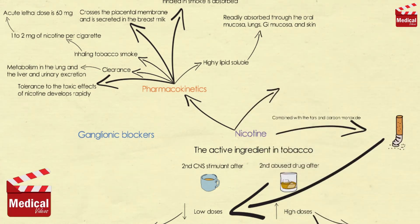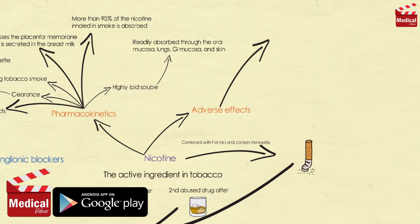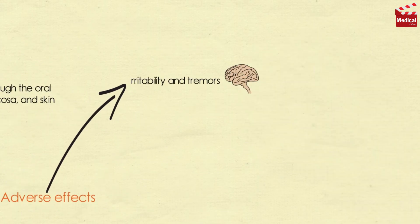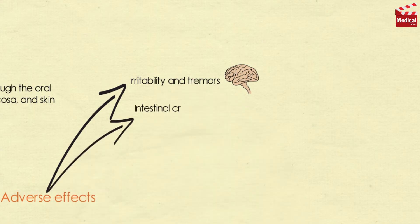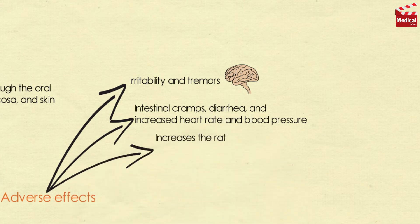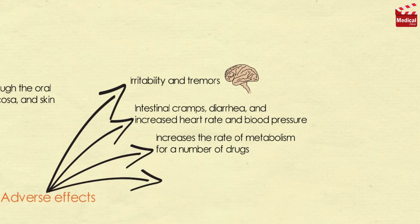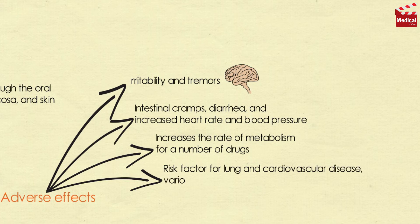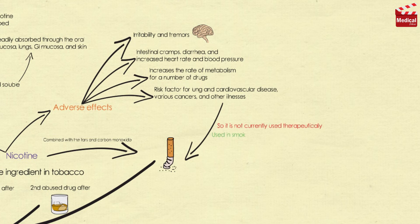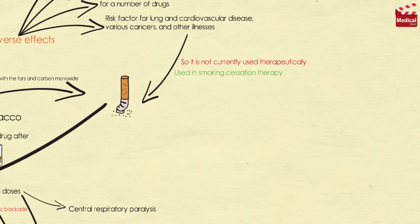Nicotine has many adverse effects, including irritability and tremors due to its CNS effects. It may also cause intestinal cramps, diarrhea, and increased heart rate and blood pressure. It may also increase the rate of metabolism for a number of drugs. Nicotine represents a serious risk factor for lung and cardiovascular disease, various cancers, and other illnesses, so it is not currently used therapeutically except in smoking cessation therapy.